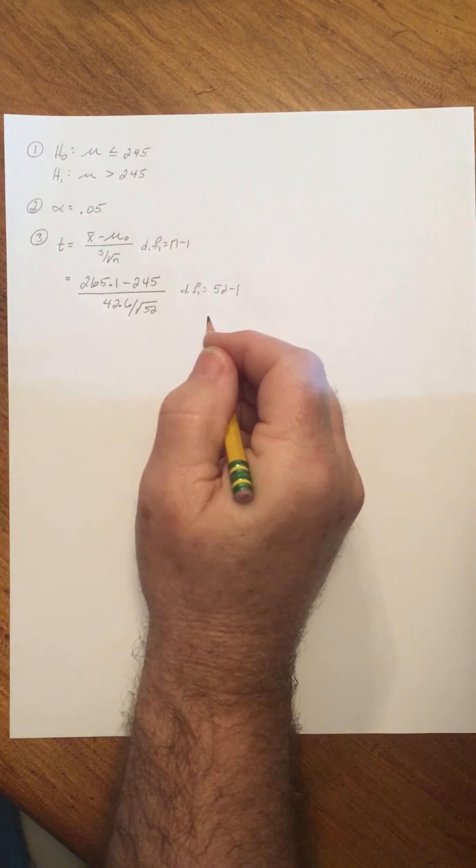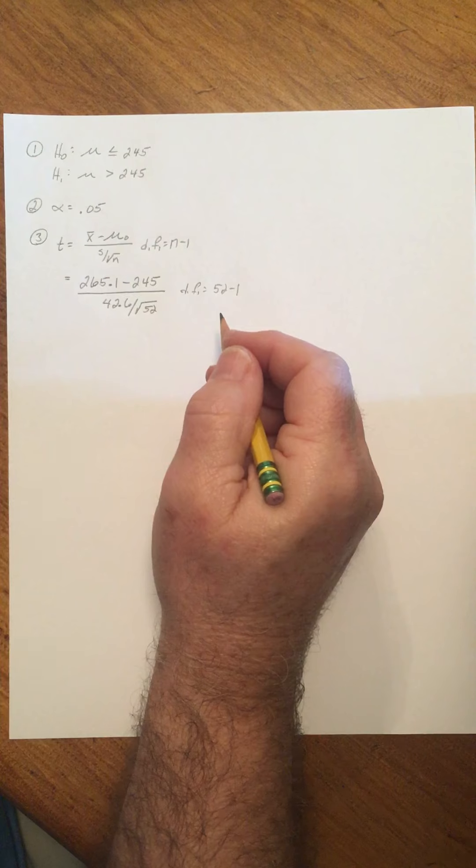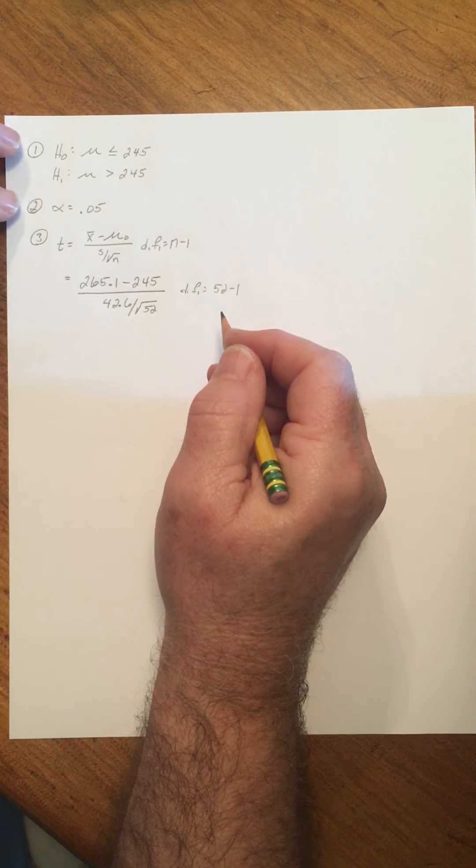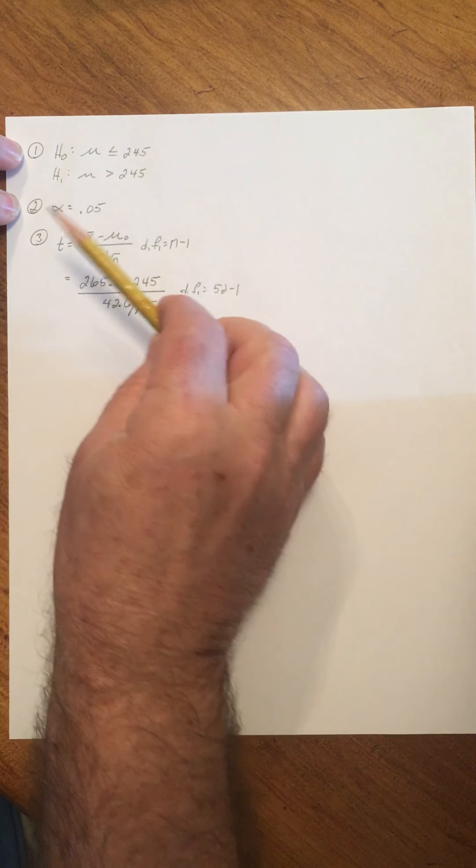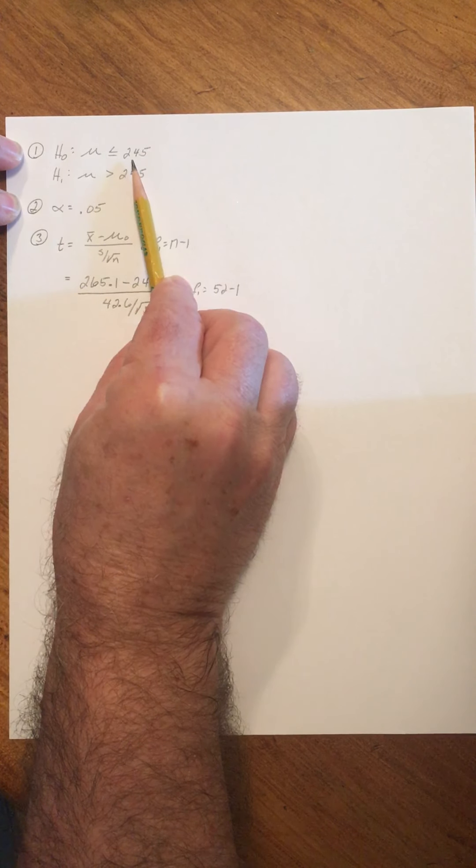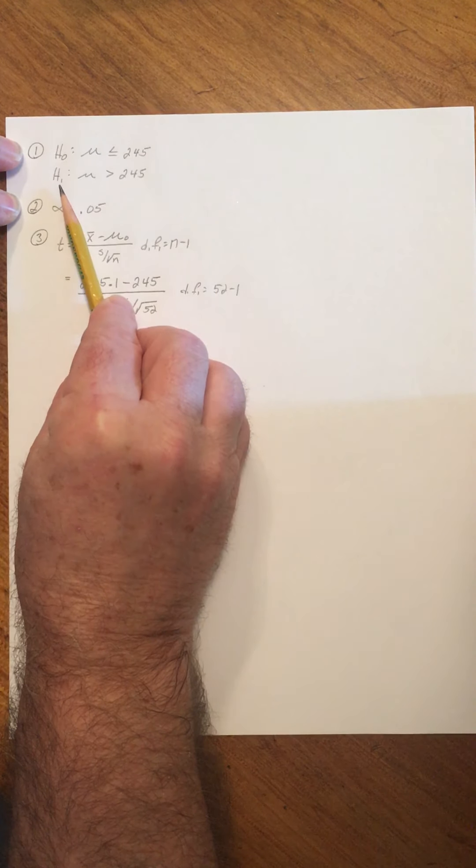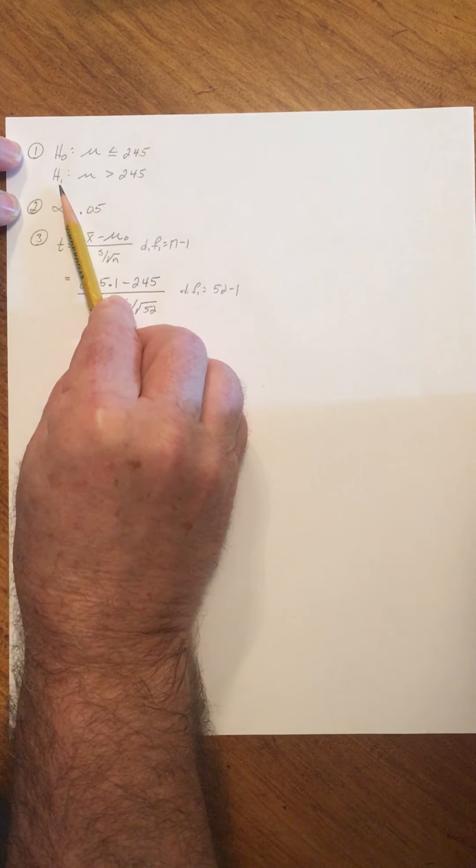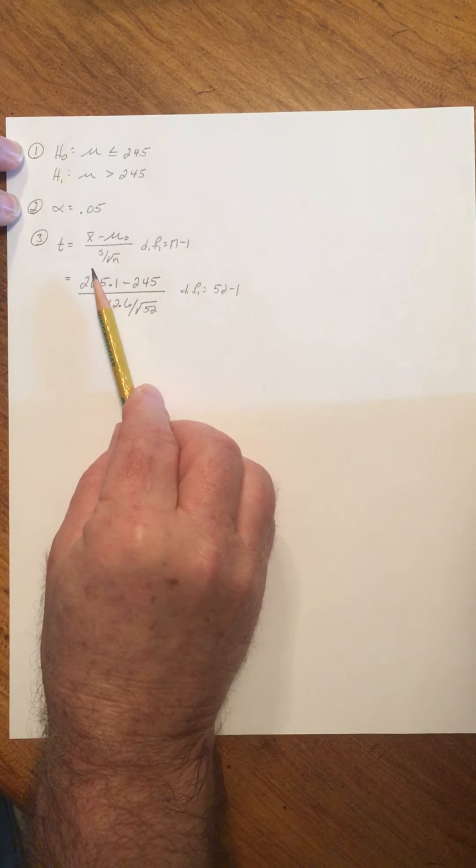We're joining our problem here already in progress. So we have the hypotheses. Remember, mu less than or equal to 245 was the null hypothesis. Alternate hypothesis, mu greater than 245.